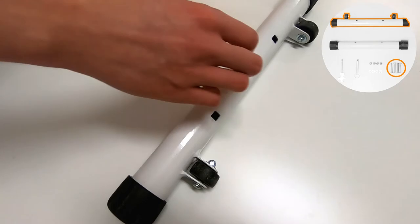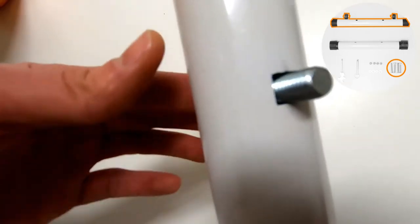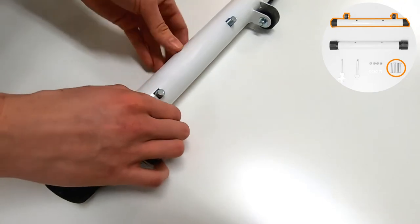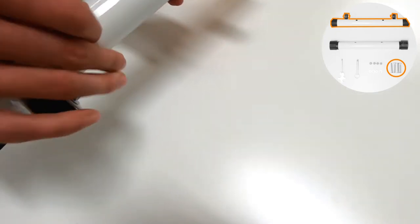Next, attach the front support by passing the 8mm square seat bolts through the base of the roller and into the bottom of the bike frame, ensuring that the rollers are facing downwards.